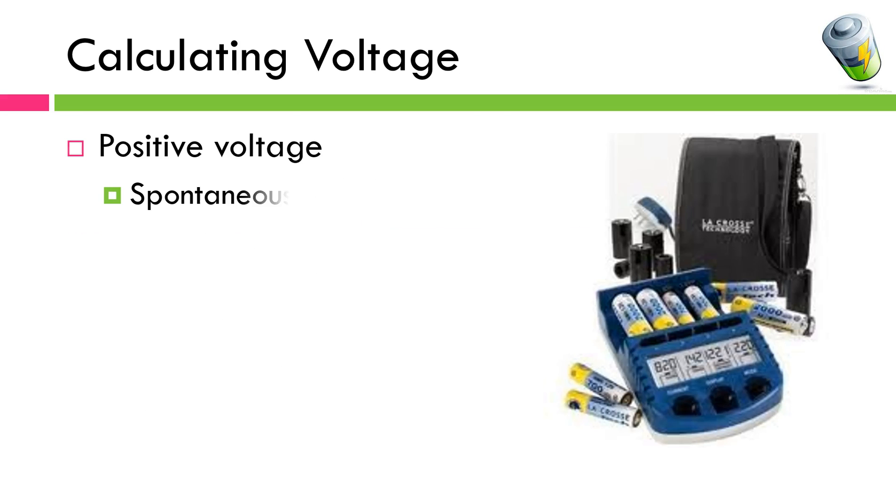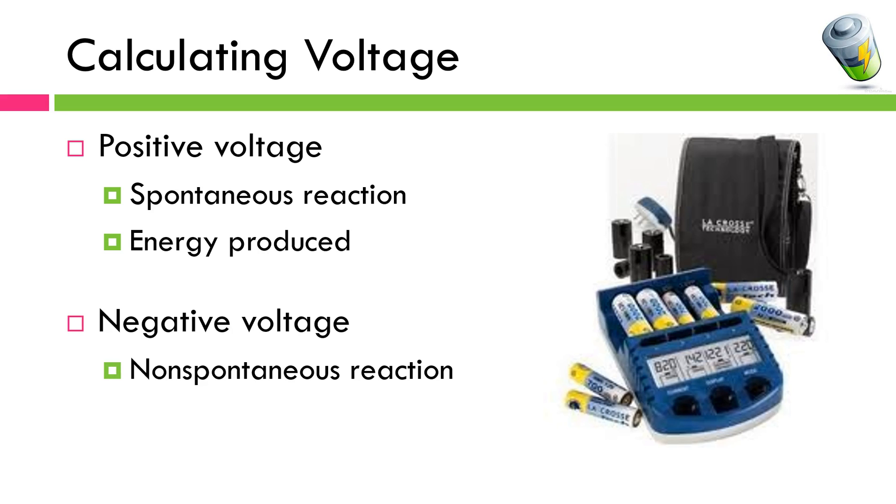When you have a positive voltage, that means that we have a spontaneous reaction and energy has been produced. There are times you might calculate a negative voltage. That means that you've got a non-spontaneous reaction occurring and energy is required. And a really good example of negative voltages is something like a rechargeable battery. So when you're using the battery and using it to power something, voltage is going to be positive. It's going to produce electricity. And eventually that battery will die. And in order to recharge it, you have to plug it in. So you have to force the electrons to go in the opposite direction from which they want to. Therefore, it's going to be a non-spontaneous reaction requiring energy.